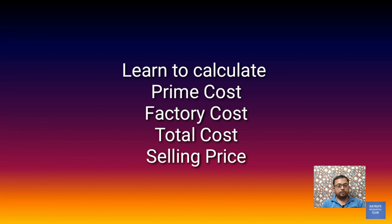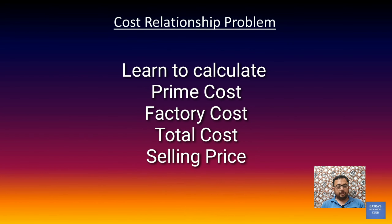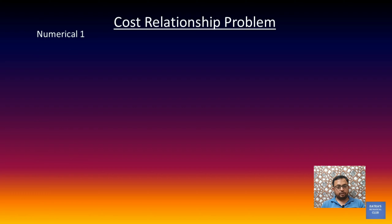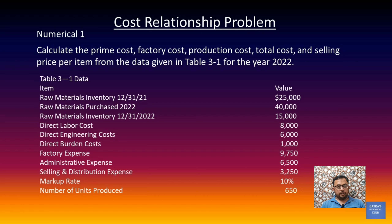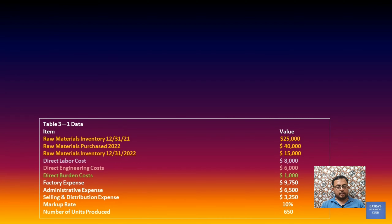Today we will do an example of a numerical related to the cost relationship diagram. In this numerical we have to calculate the prime cost, factory cost, production cost, total cost, and selling cost per unit. The given data includes ending inventory for 2021, inventory purchased in 2022, remaining inventory after 2022, direct labor cost, direct engineering cost, direct burden cost, factory expenses, administrative expenses, selling and distribution expenses, market rate, and number of units produced.